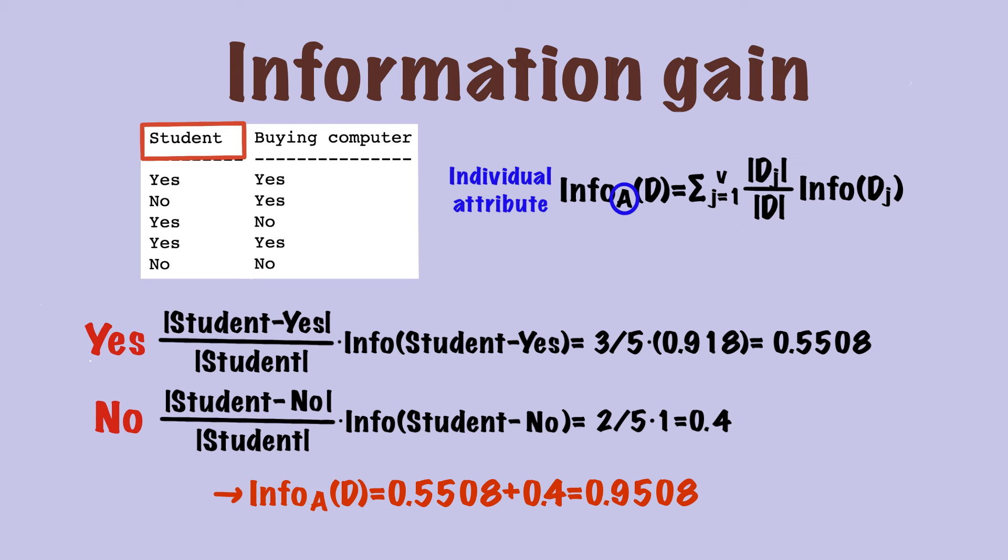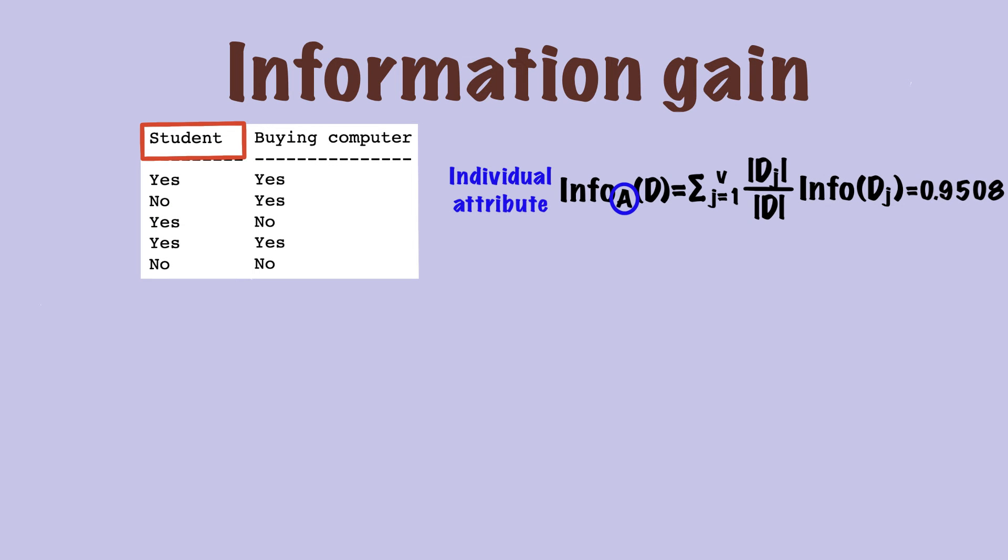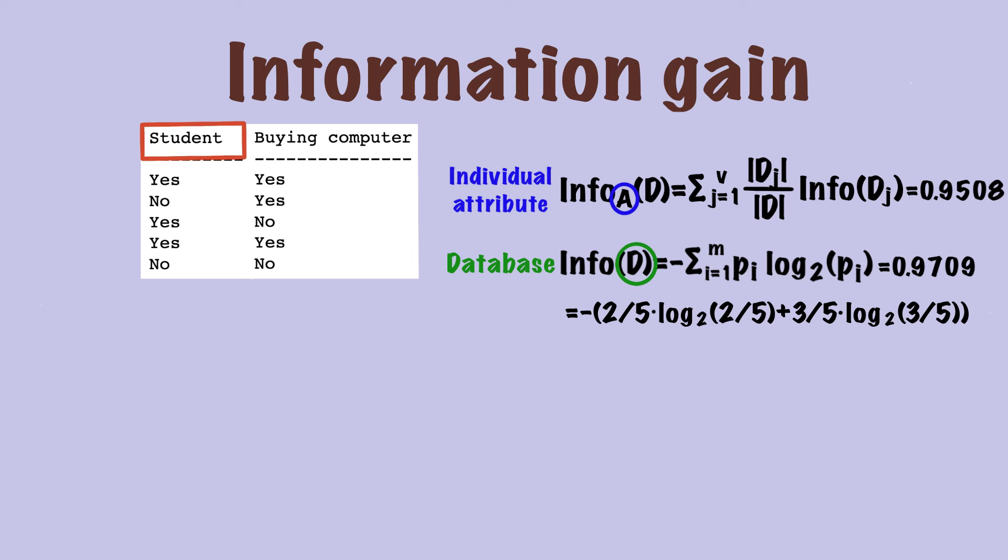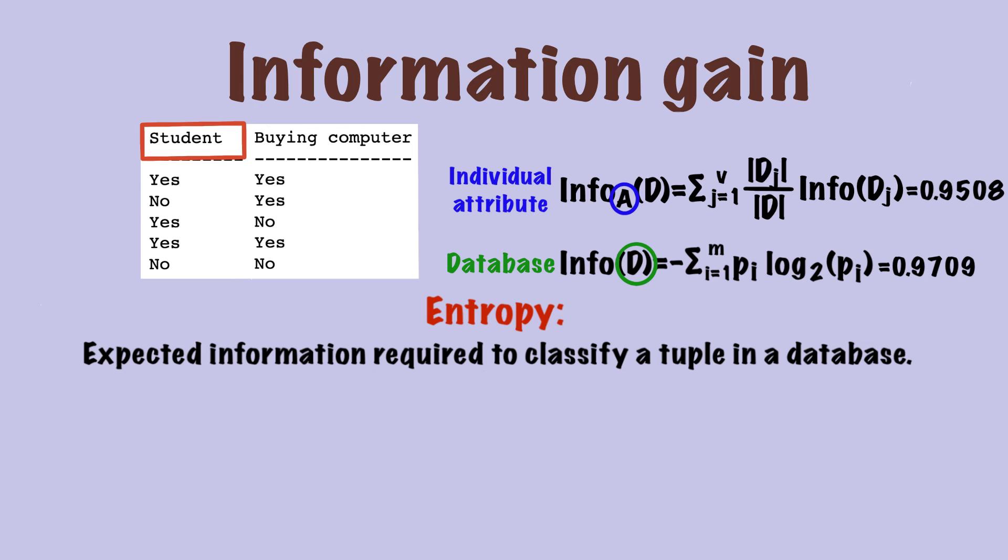However, this is still not information gain, but we are getting close. The entropy for attribute student is 0.9508, and the entropy for the database is 0.9709. I put the calculation process here for reference, but I hope it's straightforward to you. We've talked about entropy a lot, but entropy is just the expected information required to classify a tuple in database.